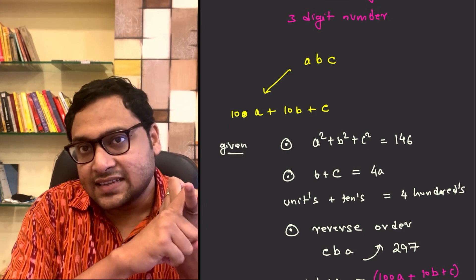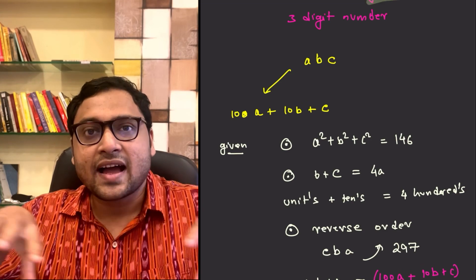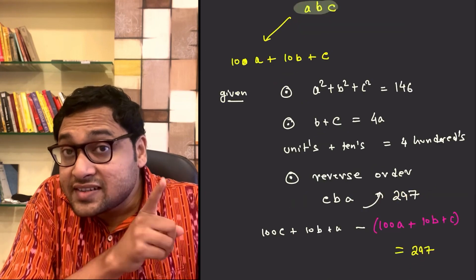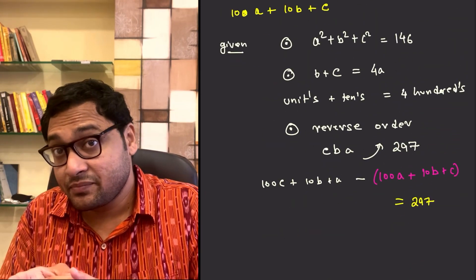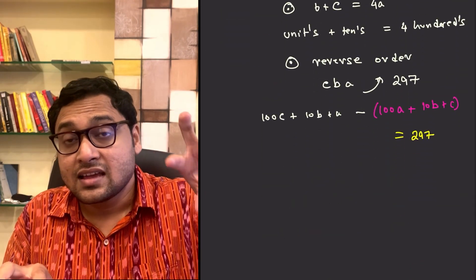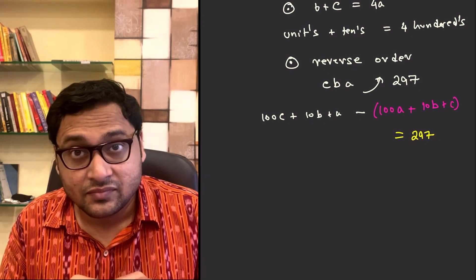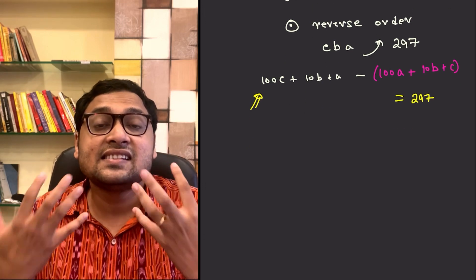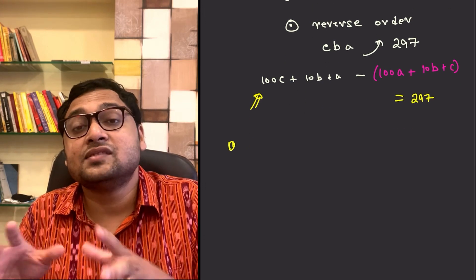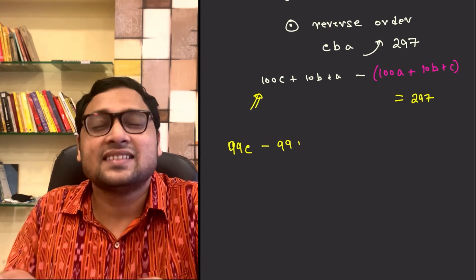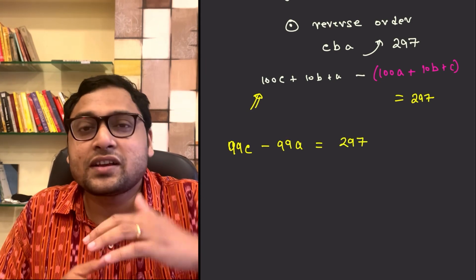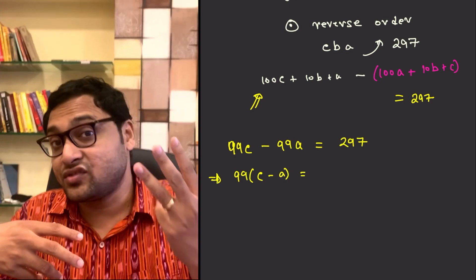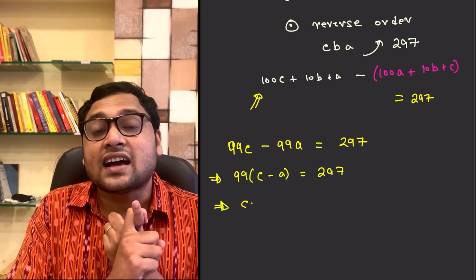The first step is to realize that we can just subtract 100A plus 10B plus C from 100C plus 10B plus A. We can subtract that, and we get 297. And this turns out to be really simple. It's 99C minus 99A, 99 times C minus A. So, you can just divide by 99 to get C minus A as 3.